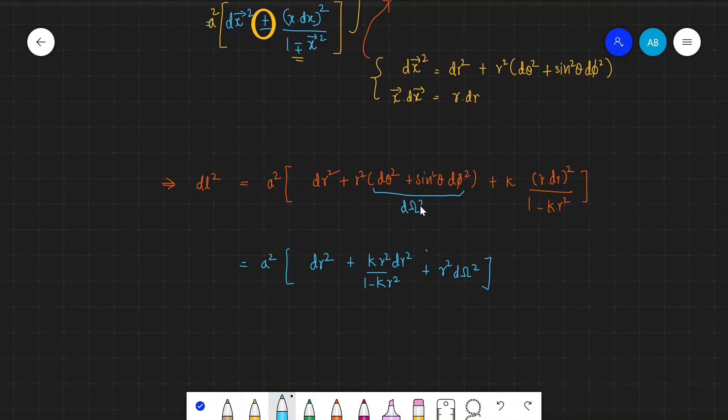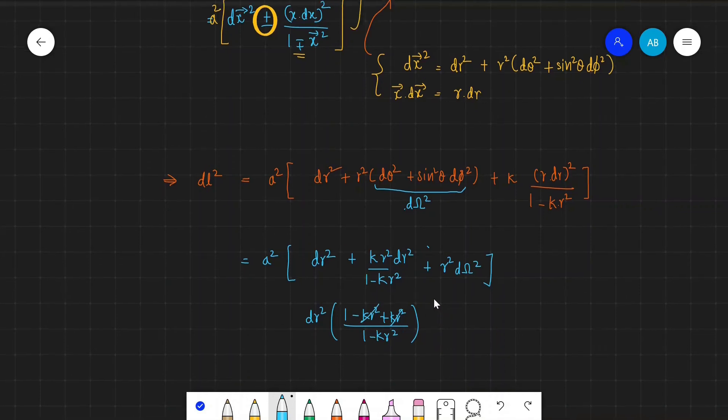The first two terms give us — we can write dr² comment out — then 1 minus kr², then 1 minus kr² plus kr², all divided by 1 minus kr². So these two terms cancel.